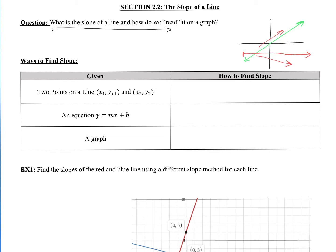A different example would be if I had a line like this blue one. As I read from the left to the right, this line looks like it's slowly tilting downwards. So that would be a line with a negative slope. Downwards is a negative slope and upwards is a positive slope.